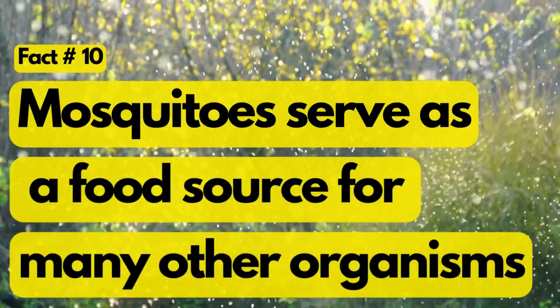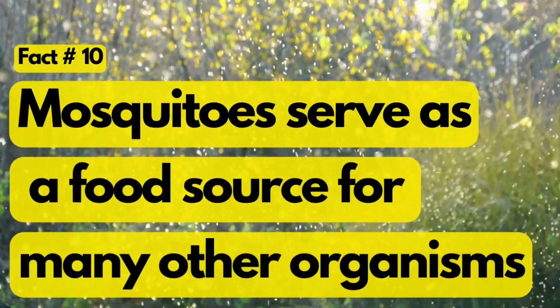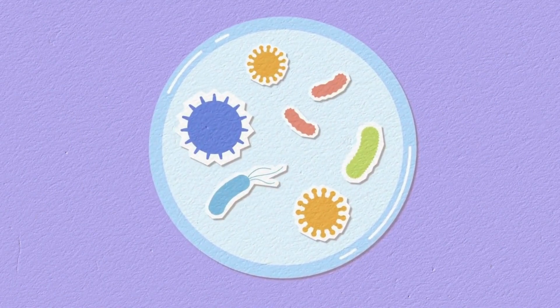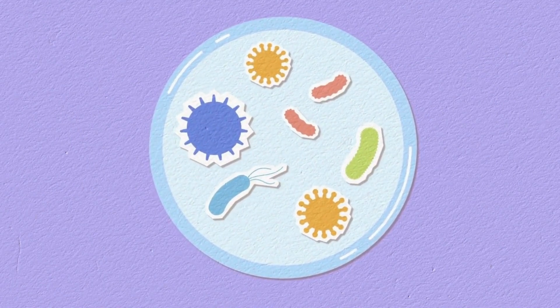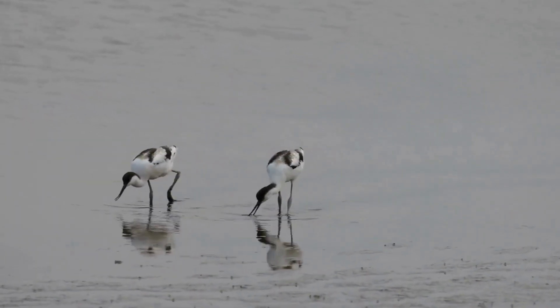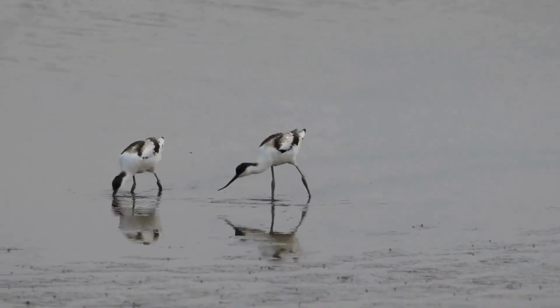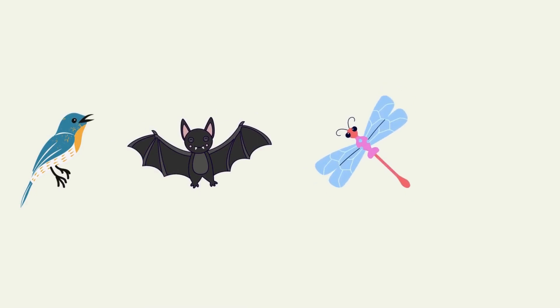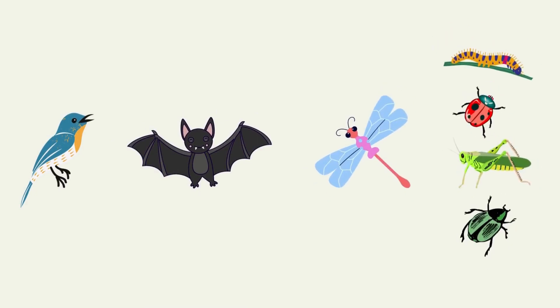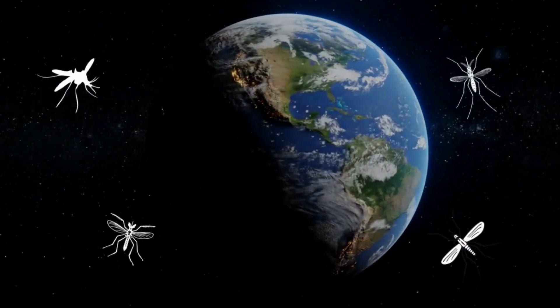Fact number 10: Mosquitoes serve as a food source for many other organisms. They are eaten by birds, bats, dragonflies, and other insects, contributing to the balance of various food chains.